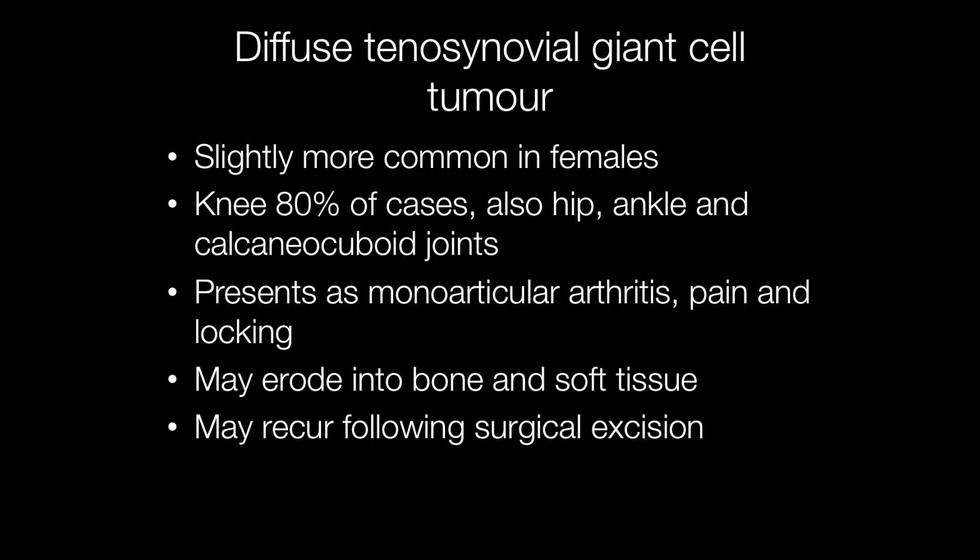Diffuse tenosynovial giant cell tumour is slightly more frequent in females than males, and the most common location is the knee, accounting for approximately 80% of cases. It may also arise in the hip, ankle and foot. Symptoms include monoarticular arthritis, pain and locking.